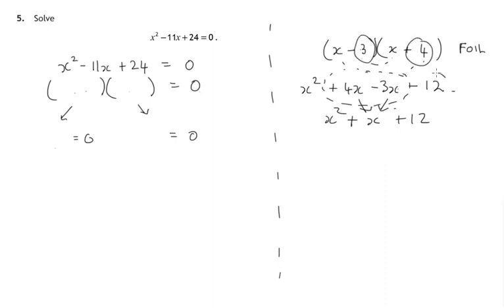Looking at the 12: 3 times 4. Looking at the middle term: 4 minus 3, or negative 3 plus 4. Adding or subtracting these two numbers gives you the middle term; multiplying them gives you the last term. That's what's going on here.